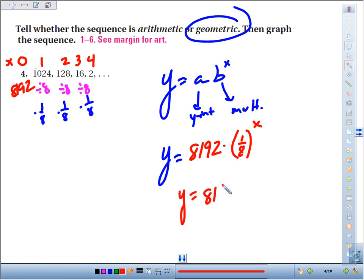The last thing I asked you to do is to find the seventh term in the sequence. 8192 times one-eighth to the seventh power. If we do that, 8192 times one-eighth to the seventh power gave it to me as a fraction: we get 1 over 256.